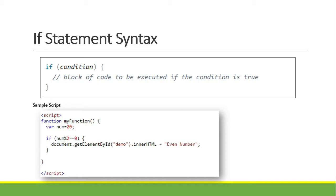This is the syntax for using the if statement. We write 'if', and then inside the parentheses, we place our condition. The condition uses comparison operators — we can place greater than, less than, equal, not equal, and so on. After the condition is the opening curly brace. Inside the opening curly brace is our statement or block of code, which will be executed if our condition is true. Then after our block of code is the closing curly brace.